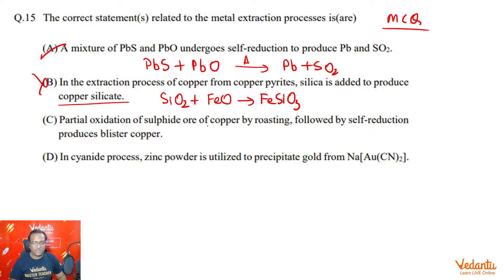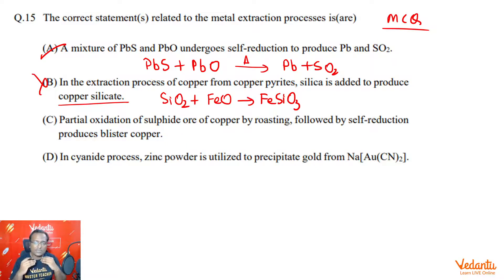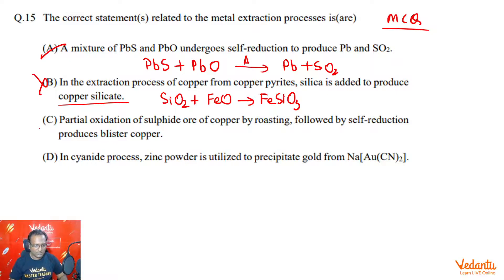Partial oxidation of sulfide ore of copper by roasting followed by self-reduction produces blister copper. Absolutely correct — this is the entire theory of copper production. First we take sulfide ore, that is copper pyrite, we roast it, it undergoes self-reduction, and then we finally obtain blister copper. Blister copper is then purified by electrolytic refining method. So this option is correct.